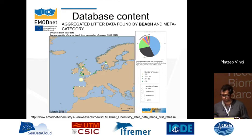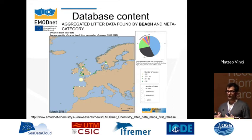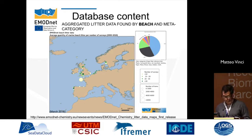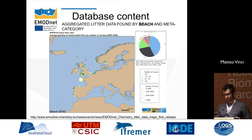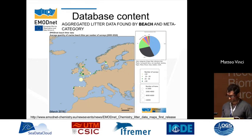Here is an example of aggregation: the first release of aggregated maps in March 2018. We are still working to update and improve outputs. The map shows the number of surveys at European beaches represented by the color legend, and the number of items discovered is shown by the width and dimension of the circles.